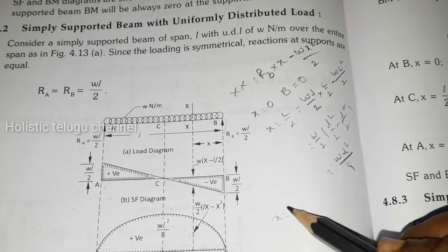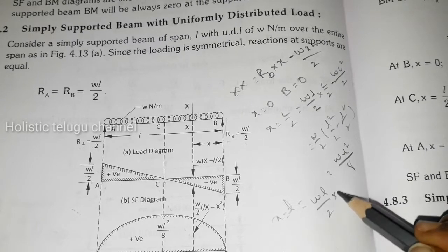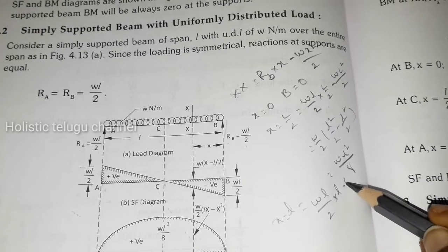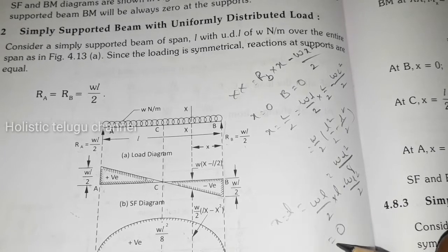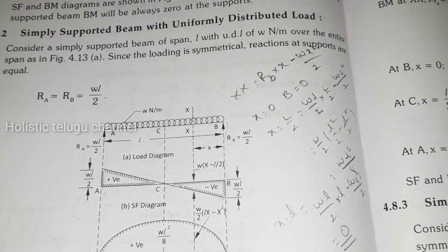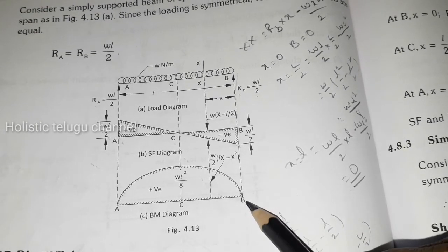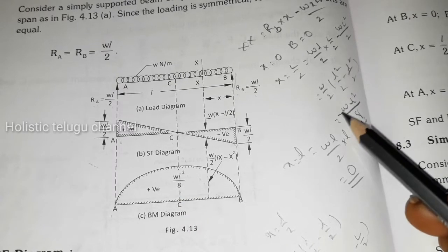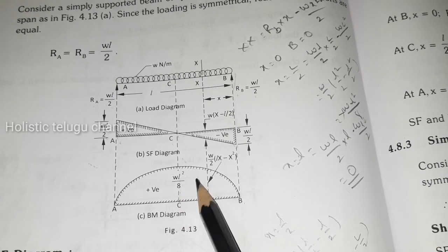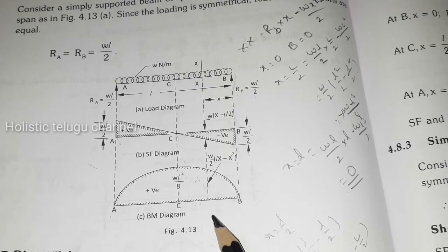If X equal to L, WL by 2 into L minus WL² by 2, so minus plus, that is 0. So here, B equal to 0, at A equal to 0, WL² by 8, so plus, in this line we get the value. This is simply supported beam with uniformly distributed load.